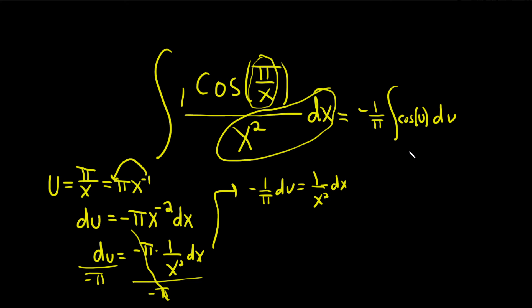Now we have to integrate cosine. So just think backwards. What's a function whose derivative is cosine? The derivative of sine is cosine. So this is negative 1 over pi times the sine of u. And then don't forget the plus c.